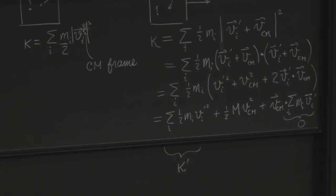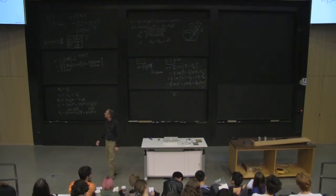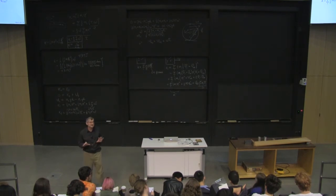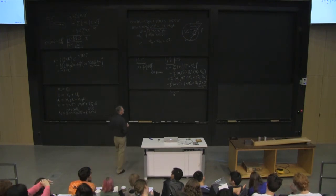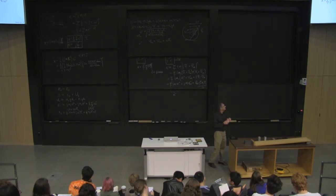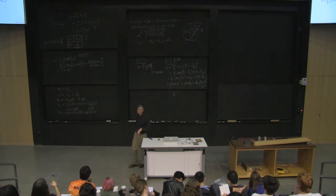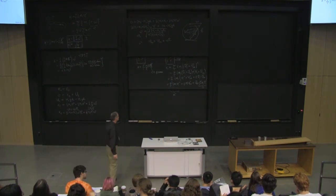So we're left with this very beautiful result that the kinetic energy of the system that's moving, whose center of mass is moving, can be expressed as just the kinetic energy in the center of mass frame, plus put all the mass at the center of mass, have it move the way the center of mass is moving, and take that kinetic energy. So the cross terms disappeared.